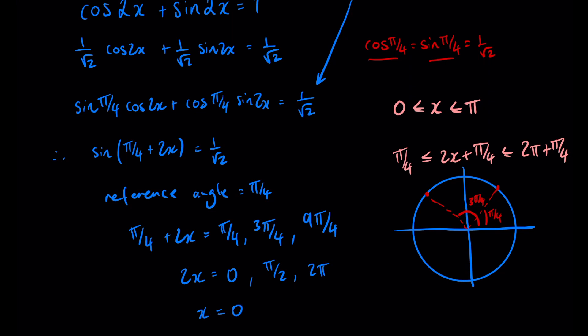Dividing by 2 we get x equal to 0, π on 4, and π, and these are our solutions for the domain we're given. Hope you found that instructive and I'll see you in the next one.